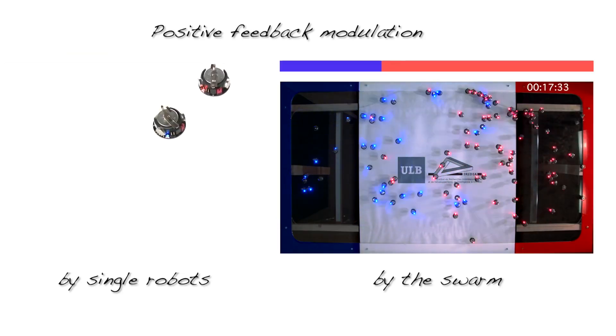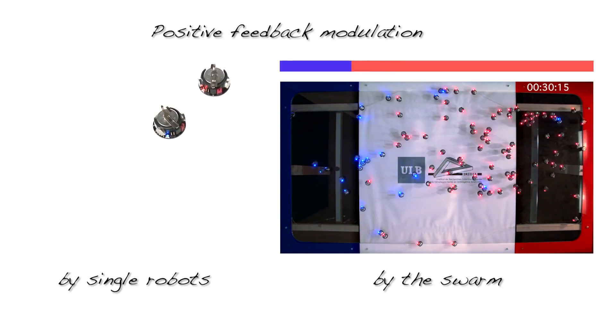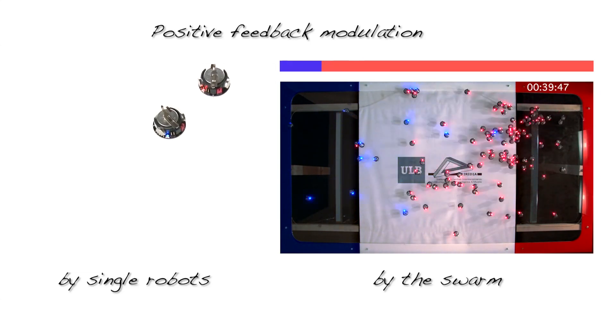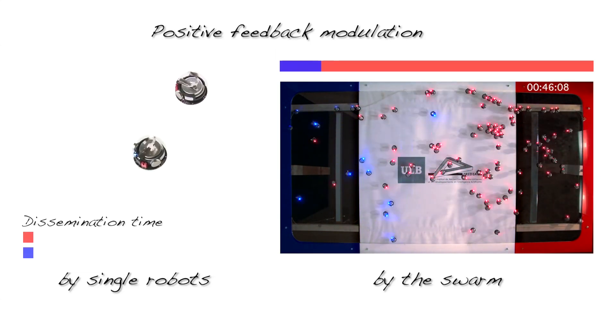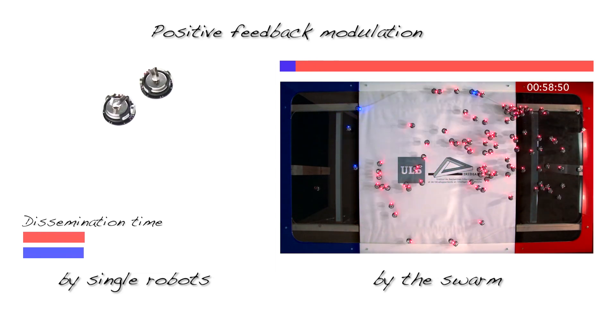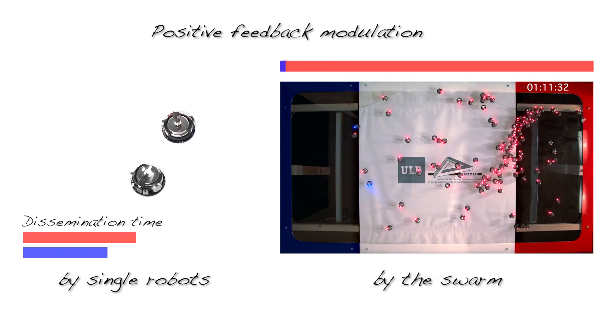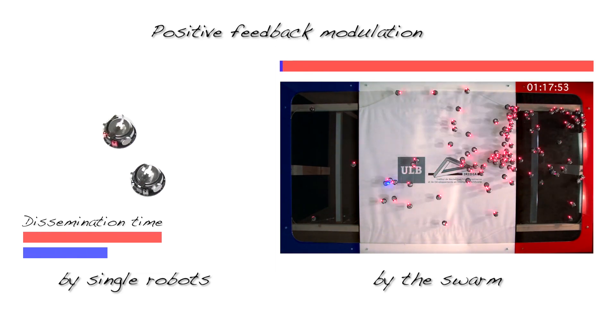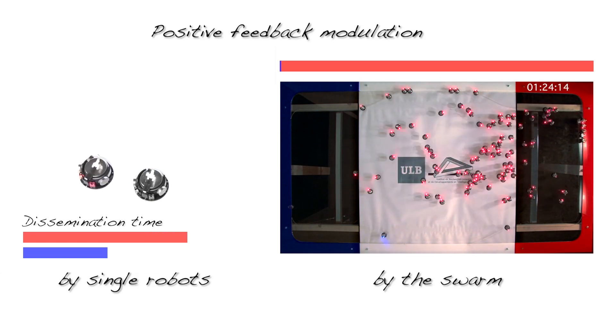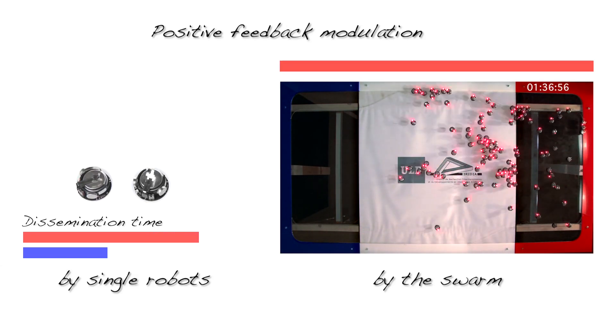In a way similar to honeybees, the effort each robot makes to promote a particular site is proportional to the quality of that site. Specifically, a robot promotes its preferred site for a time that is proportional to its current estimation of the site quality. This modulation mechanism introduces a positive feedback that over time leads the swarm to choose the highest quality site.